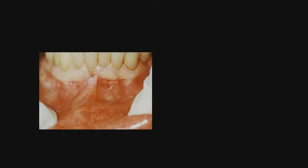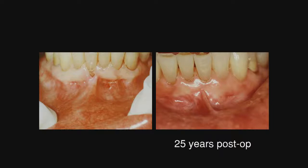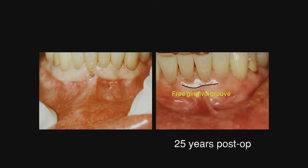This is where we started, and now we show a 25-year post-op. Even though some recession has reoccurred and there is root abrasion from improper toothbrushing, you will see that we have keratinized tissue coronal to the flap and we can see the free gingival groove.